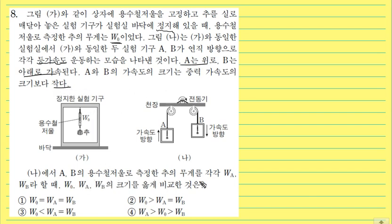나에서 A, B의 용수철 저울을 측정한 무게를 각각 WA, WB라고 할 때 원래 기본적인 무게와 이네들의 크기를 비교하는 문제인데, 여러분들 이런 거는요 시뮬레이션을 해보면 돼요.